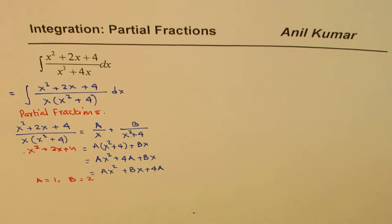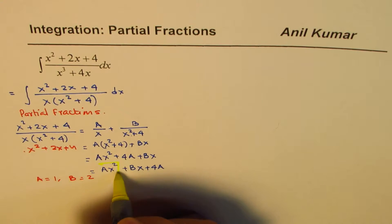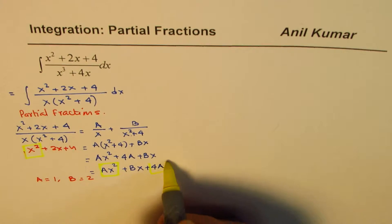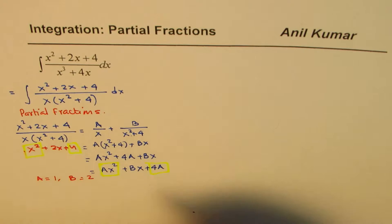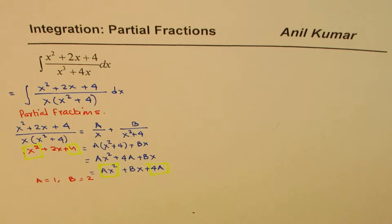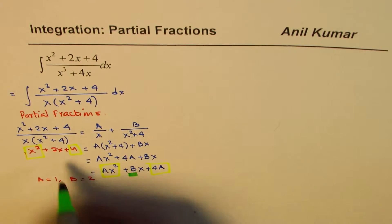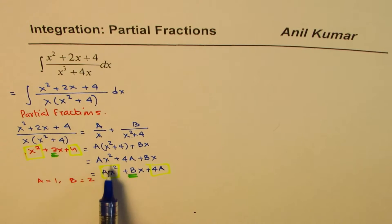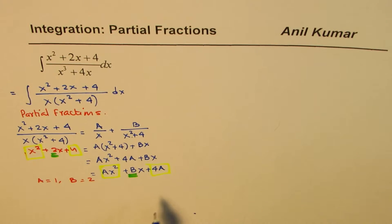So what I'm trying to say here is compare equal in parts. So a is 1. Even this part, you say a is 1. And as far as b is concerned, bx, 2x, so b is 2. So once you get that, that means we have done this first step of partial fractions.